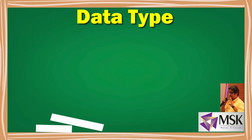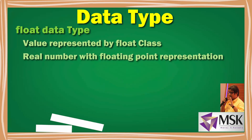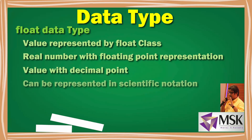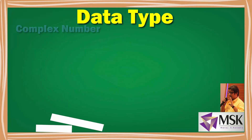Moving on to float: the value represented by the float class is a real number with floating point representation, meaning it will have a decimal point. Floats can also be represented in scientific notation using 'e' (uppercase or lowercase). We will see this in the demonstration.